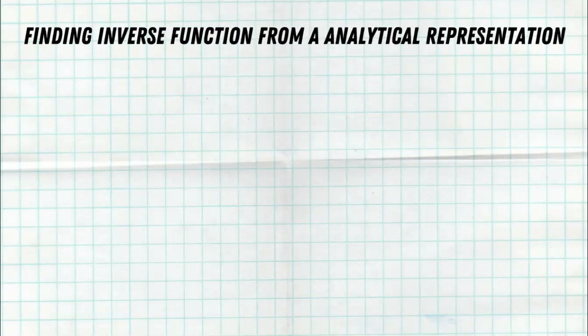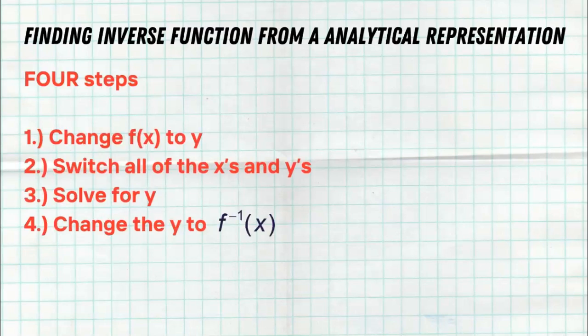Now what about finding inverse functions from an analytical representation of a function? This is where we have to get our hands dirty and do a little bit of work, but it's pretty simple. There are four basic quick steps. First, change the f(x) to a y. Then switch all of your x's and y's — any x becomes a y, any y becomes an x. Then solve for y; that's where you'll have to do some algebra. Then identify that final answer as the inverse function, changing the y to f⁻¹(x) — which is again not an exponent, just our notation to verify that this is now an inverse function.